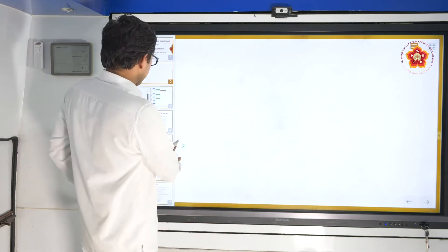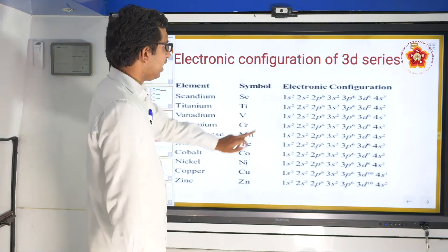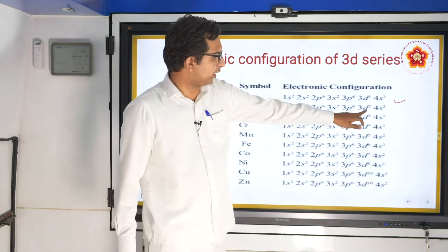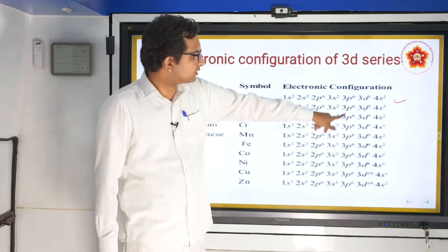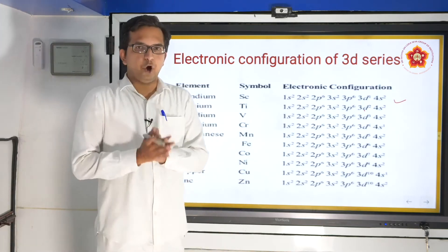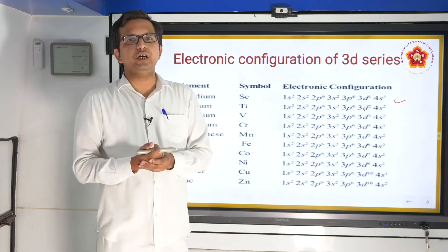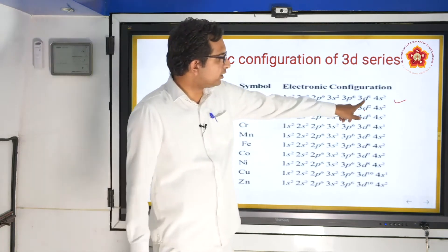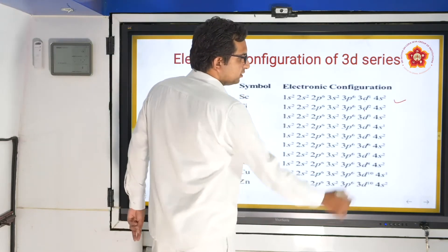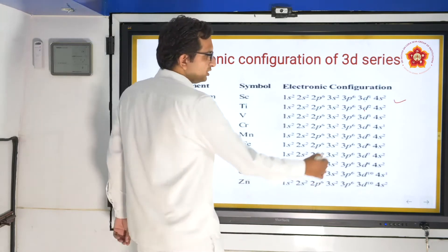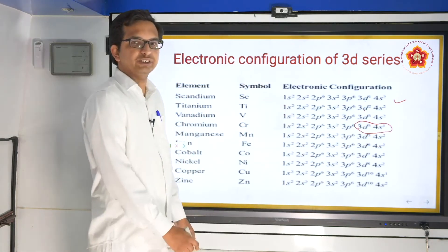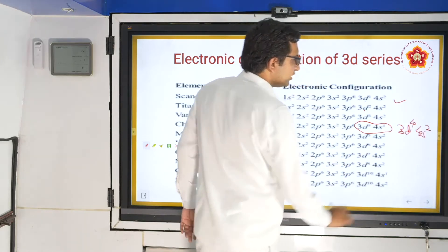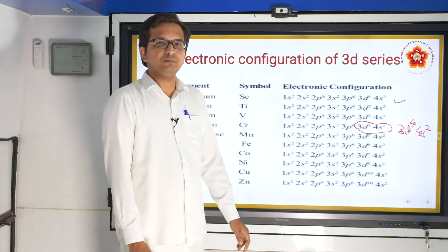So for scandium: 3d¹, 4s². For titanium: 3d², 4s². The differentiating electron — the last electron added — enters the d orbital for these d-block elements, so d increases continuously: 3d¹, 3d², 3d³. The next should have been 3d⁴, 4s², but instead it is written as 3d⁵, 4s¹. This appears to be a case of exception. Let us see further.